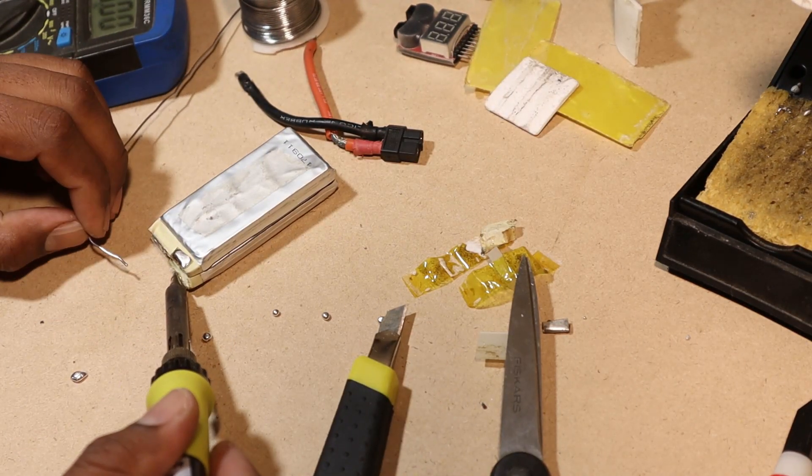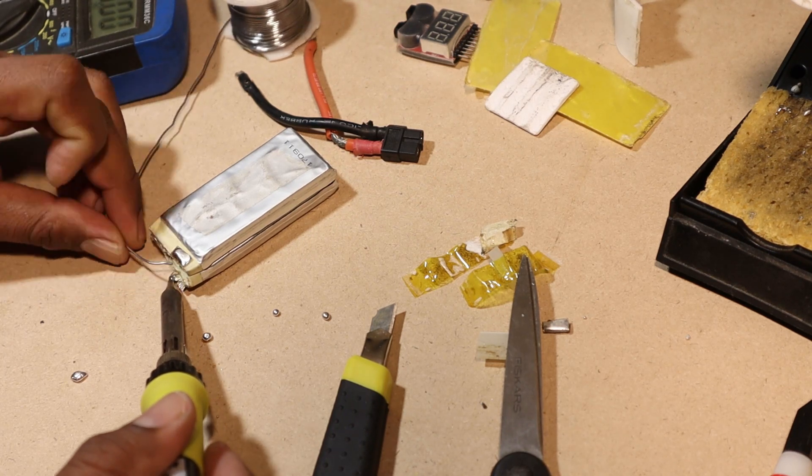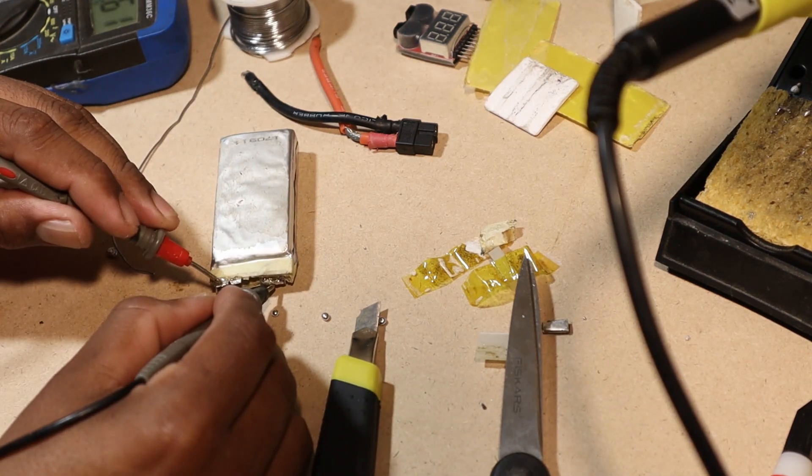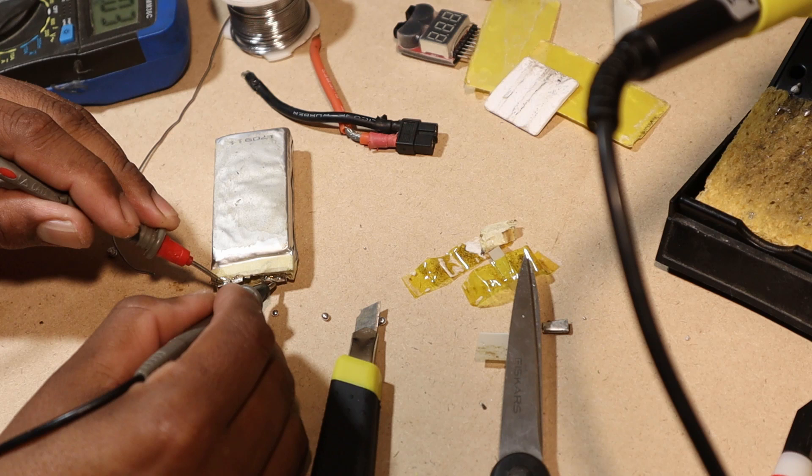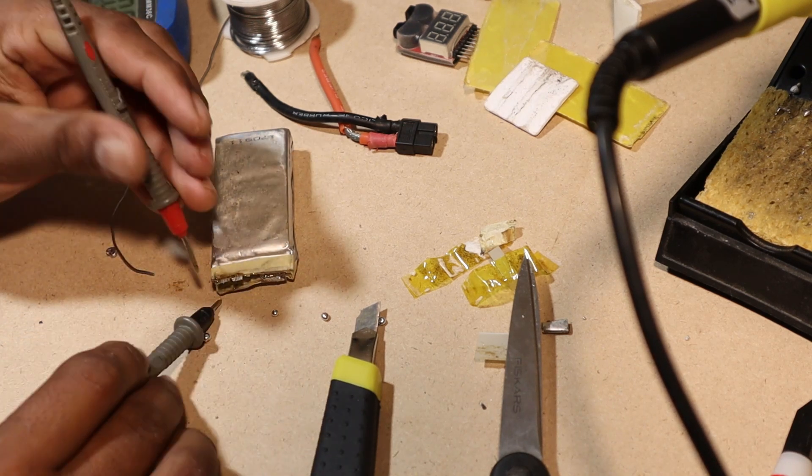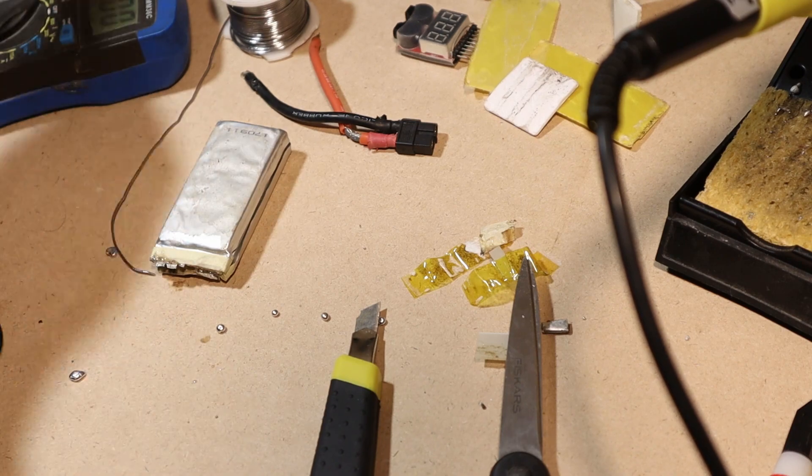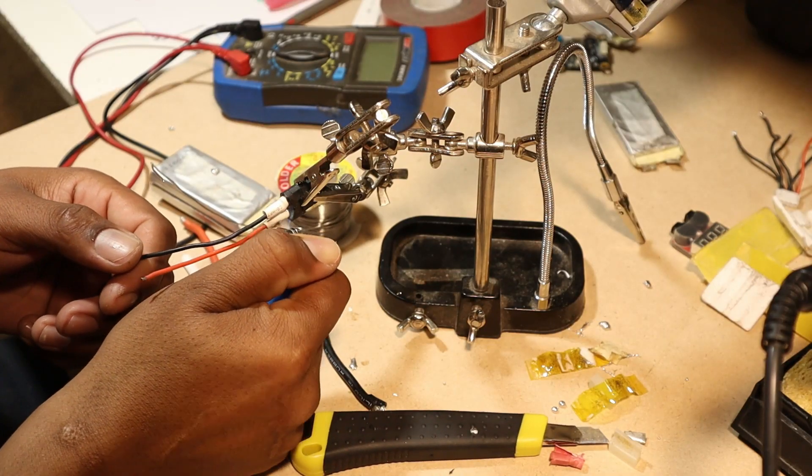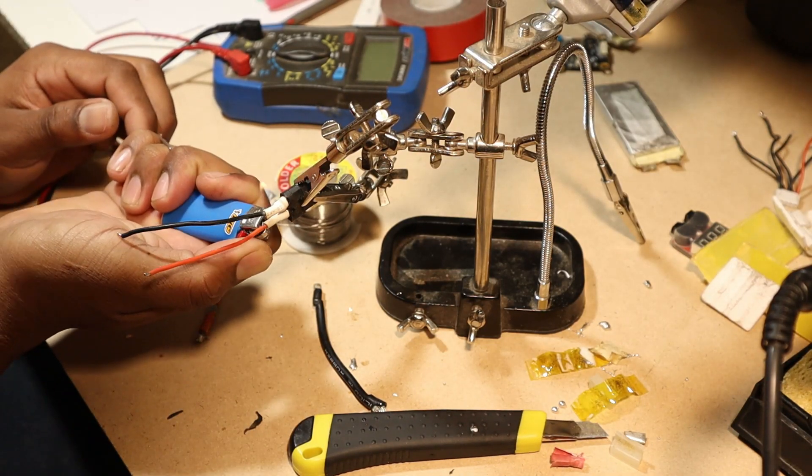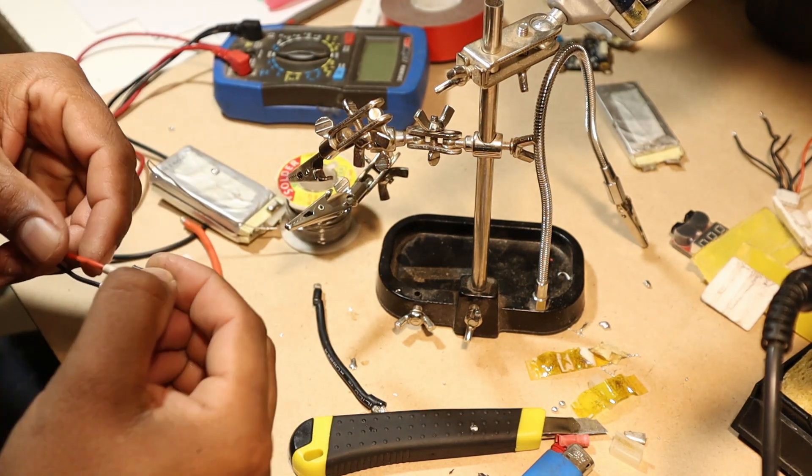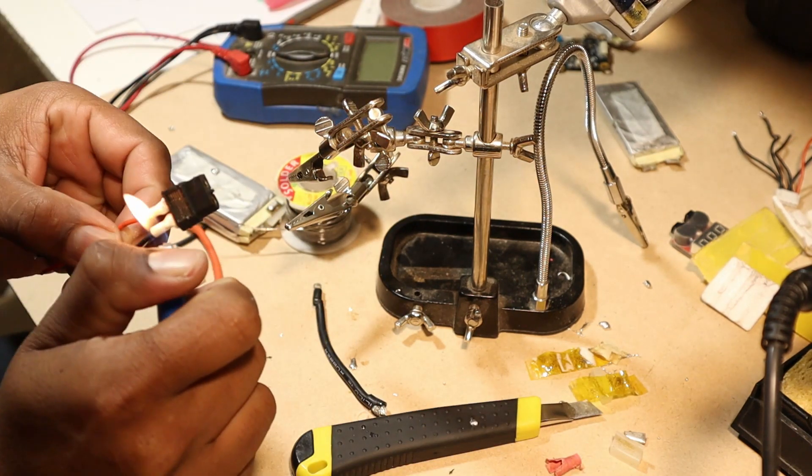So once we have both sides tinned, it's really important to check our polarity and check our joints if they're good. Once you have the polarity worked out, you should mark it and make a new XT60 connector for your battery. That's what I'm doing right now.